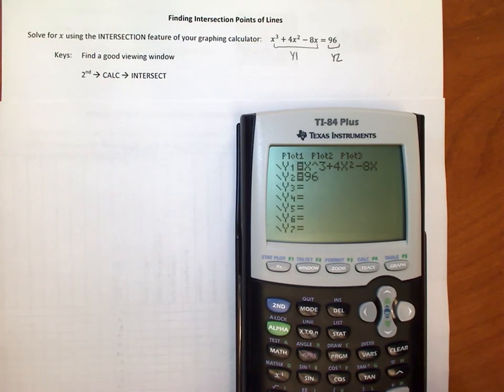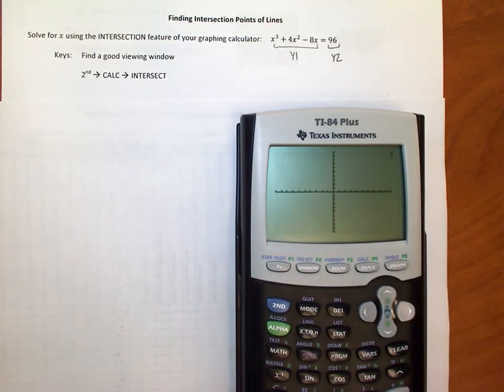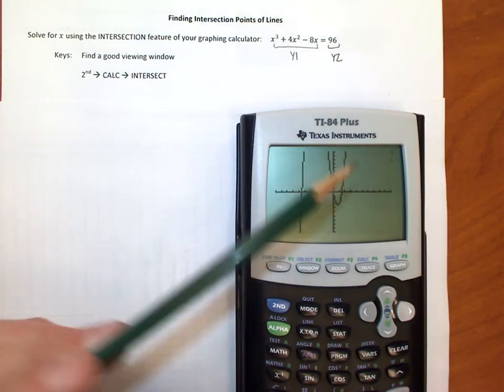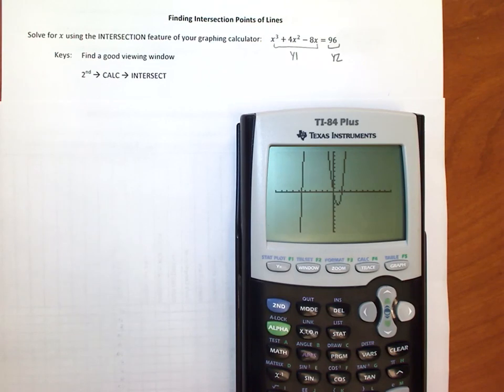Now when I graph this, my standard zoom window, there goes a line. There's that x cubed, right? There's that S curve that we kind of expected to see, but where's the 96? Well, of course, here's the problem.